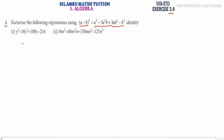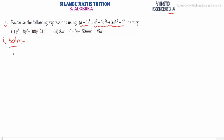Now we have two substitutions using the a minus b whole cube identity to solve this. First, copy the question: y cube minus 18y squared plus 108y minus 216. The first term is a cube term and the last term is a cube term — we have to find these.